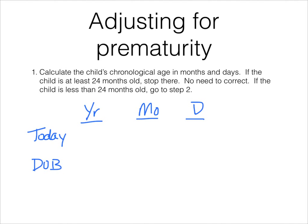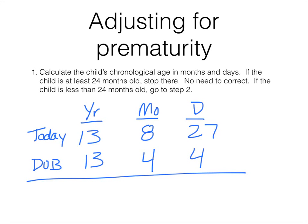Going back to Ryan, we're going to adjust for his prematurity. The first step is to calculate his chronological age in months and days. You set up a grid with the year, the month, and the day. Today's date is August 27th, 2013, and Ryan's date of birth is April 4th, 2013. So 27 minus 4 is 23, 8 minus 4 is 4, and 13 minus 13 is 0. Ryan is 4 months and 23 days old — that's his chronological age. Because he's less than 24 months old, we do need to move forward with determining whether to adjust for prematurity.